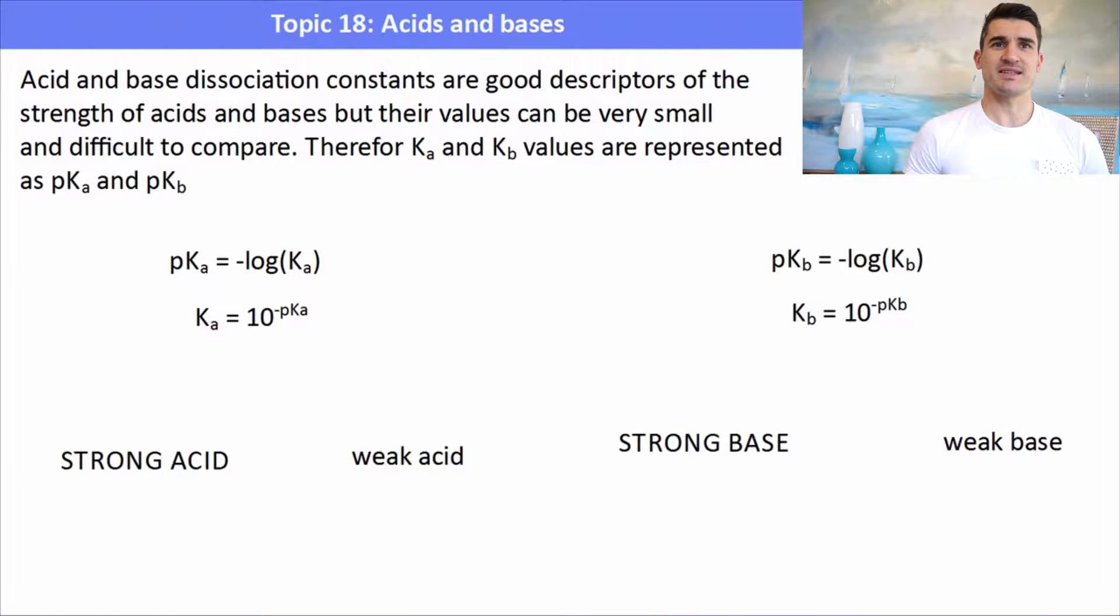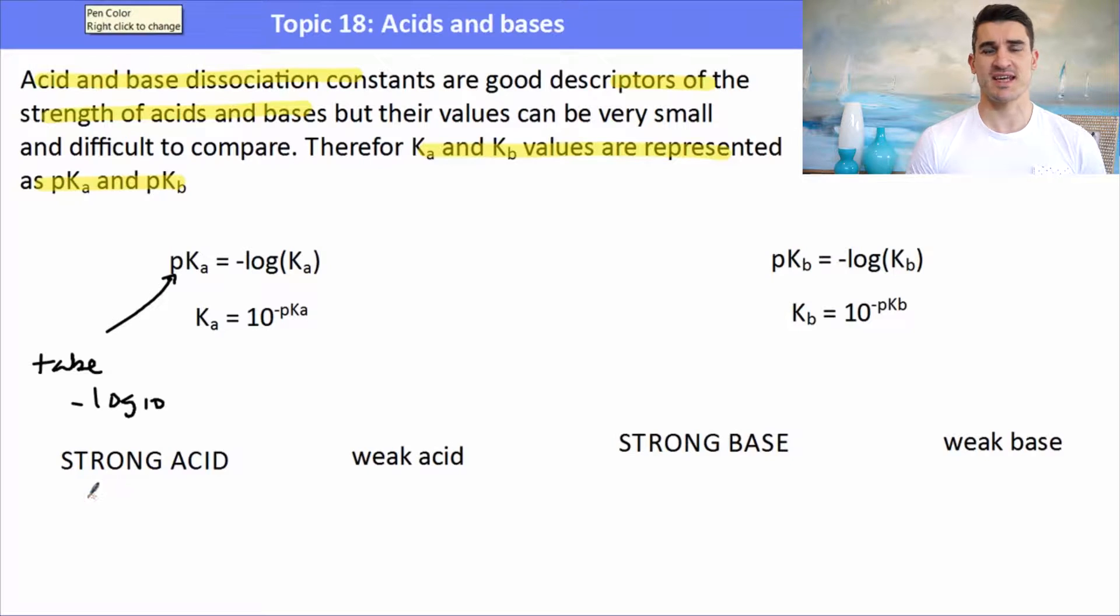Now acid and base dissociation constants are good descriptors for the strength of an acid or a base, but usually their values are really small. So we use the pKa and the pKb values which are found in the data book to help us. Now the little p out the front of the Ka just means take the negative log to the base 10 of the Ka value.